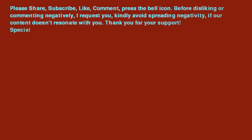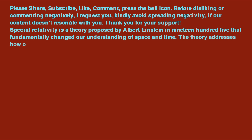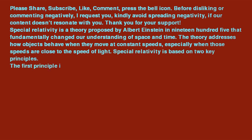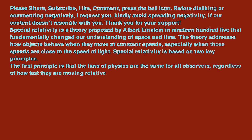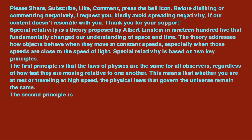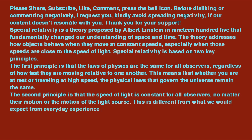Special Relativity is a theory proposed by Albert Einstein in 1905 that fundamentally changed our understanding of space and time. It addresses how objects behave when they move at constant speeds, especially close to the speed of light. Special Relativity is based on two key principles: first, that the laws of physics are the same for all observers regardless of how fast they are moving relative to one another; and second, that the speed of light is constant for all observers, no matter their motion or the motion of the light source. In the case of light, it always moves at the same speed, which is different from what we expect from everyday objects.